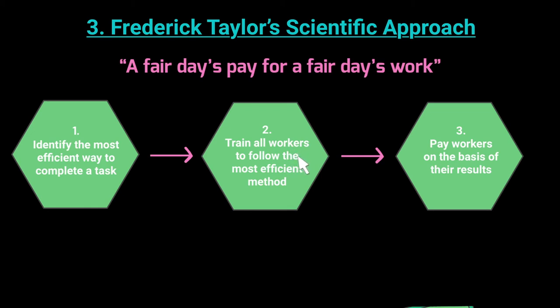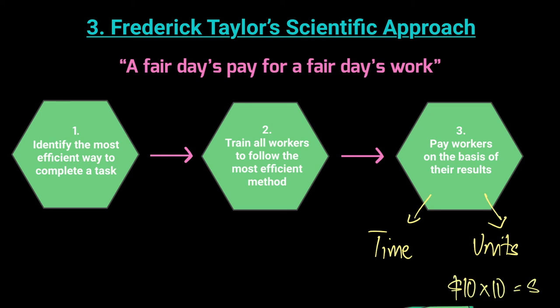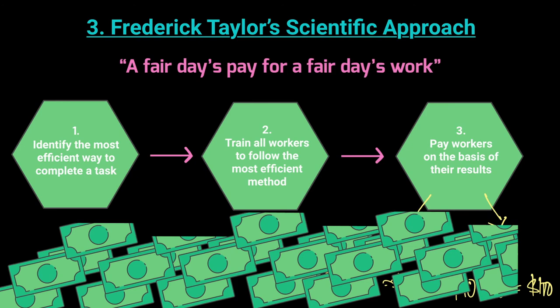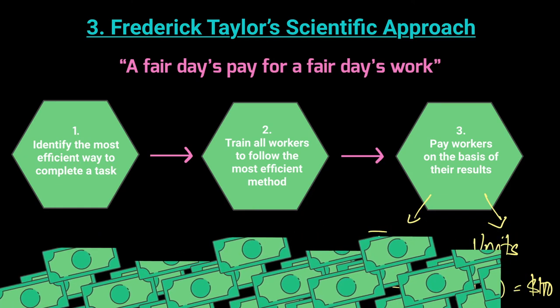Once workers are trained and given exact targets, pay them based on their results. Taylor linked this to two payment systems: time-based payment — for example $10 per hour, so 5 hours equals $50 — or piece-rate payment based on units produced, such as $10 per unit, so 10 units equals $100. The idea is to link effort directly with immediate financial rewards. Taylor strongly believes money is the real motivator.